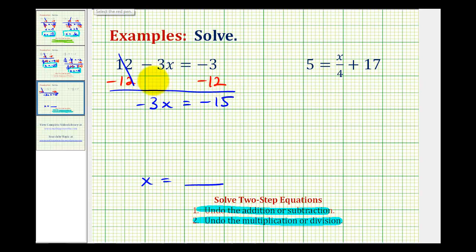And now because this negative three is attached to the x by multiplication, we can isolate the variable by dividing both sides by negative three. So on the left side, negative three divided by negative three would be one.